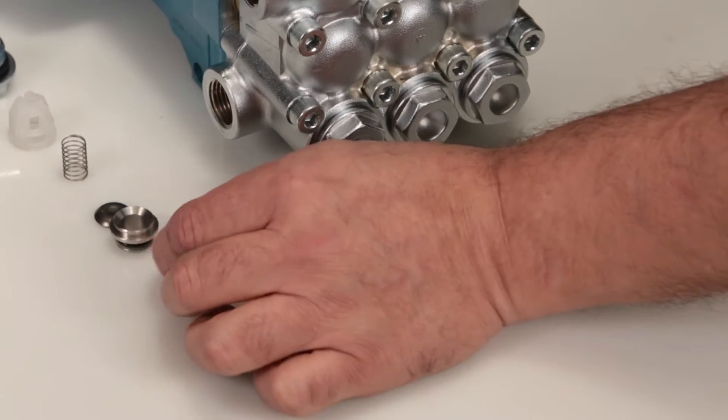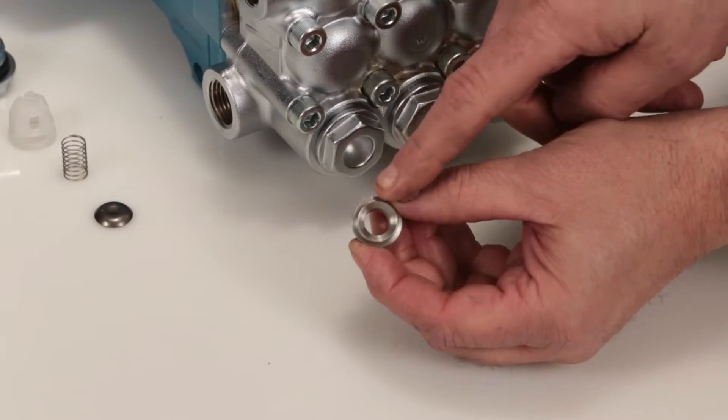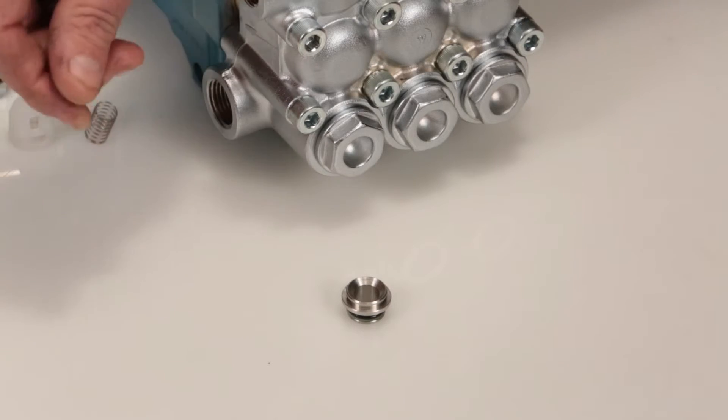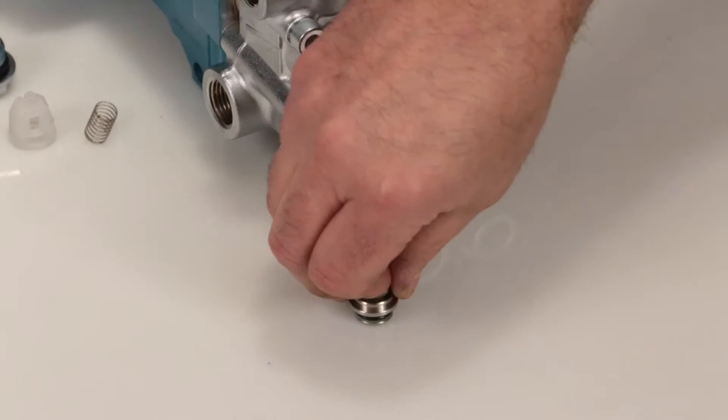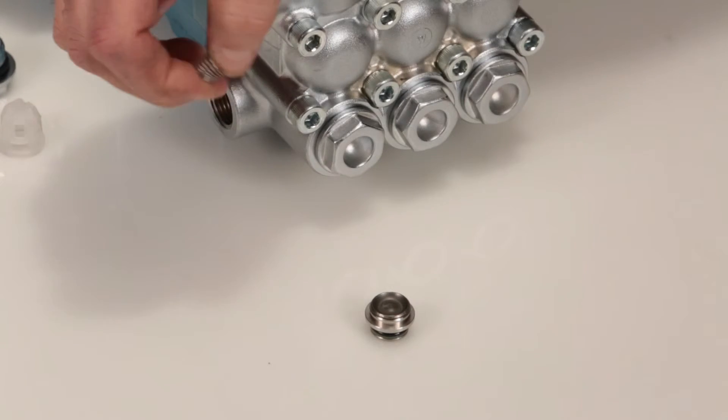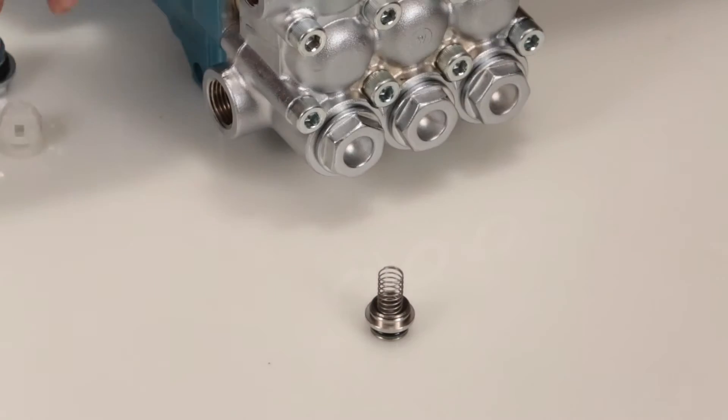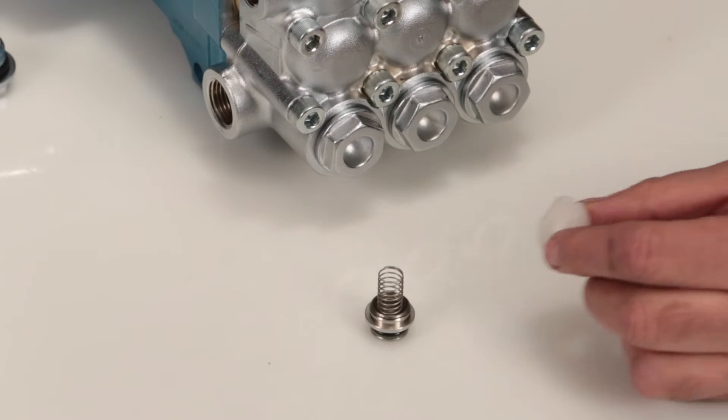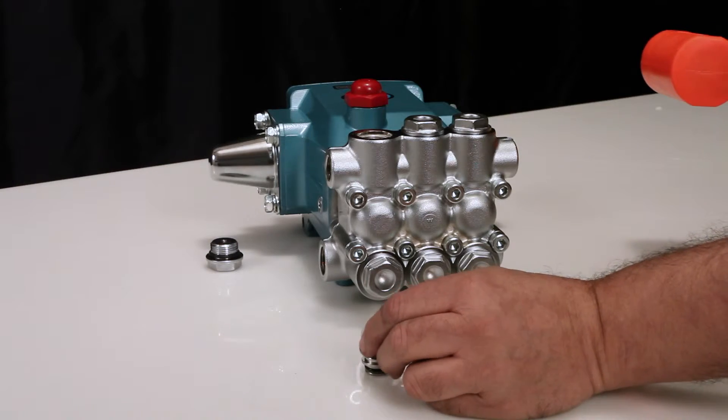To reassemble the valve assembly, place the valve seat on a flat surface with tapered surface facing up. Place valve onto valve seat with tapered surface facing down. Place the spring on the valve, followed by the spring retainer. Using a rubber hammer, lightly tap into place.